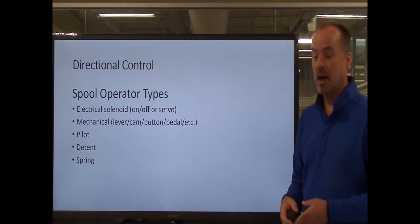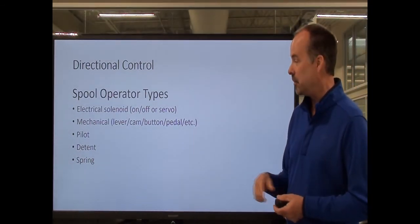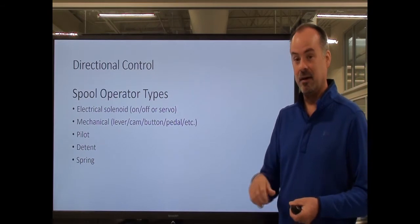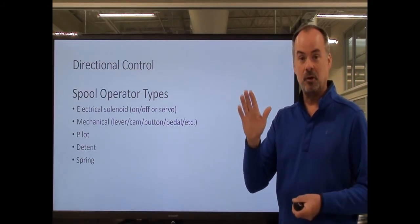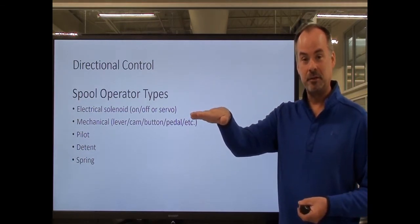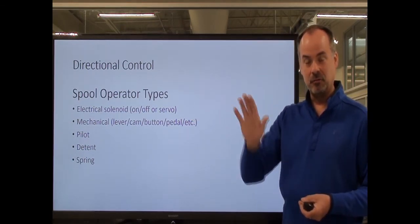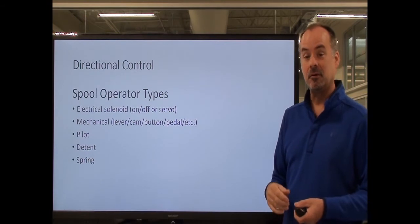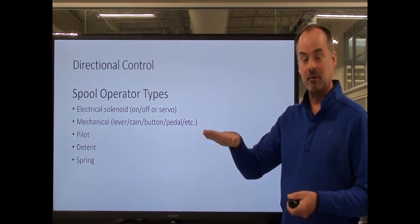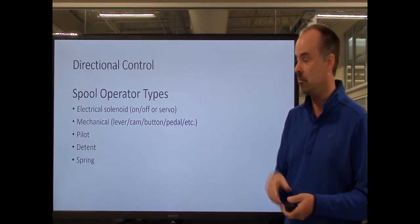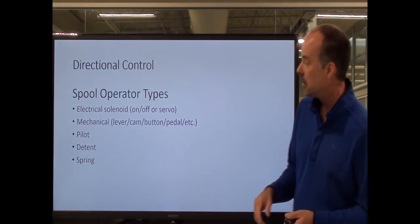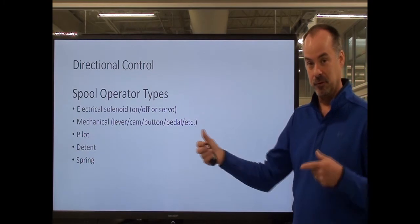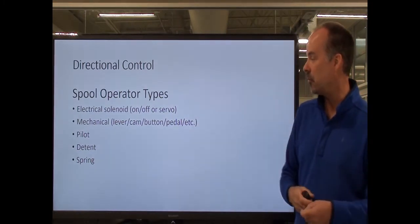An example of a mechanical operator might be a hydrostatic drive on a riding lawnmower — a mechanical three-position valve. In the center position your mower doesn't move. When you push the pedal down, it allows your mower to move in the forward direction. Let go and it goes back to center. Rock it back the other way and it shifts the spool the other way. You're able to control how far you shift the spool by how far you push the pedal. You can also have pilot control, where another valve puts fluid on the end of the spool to shift it through a pilot line.